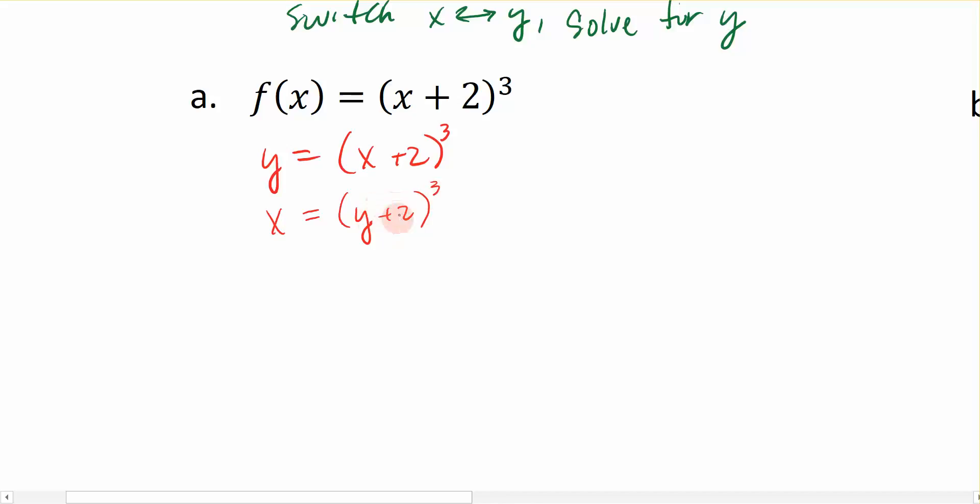Since y is within a parentheses raised to a power, order of operations tell me that I have to do what's inside before I can ever do anything else with it. So in order, that kind of gives me a problem. So I want to instead get y out from this parentheses. The only way I can do that is by taking the cubed root of both sides. Because the cubed root of a cubed term gives me just back this part.